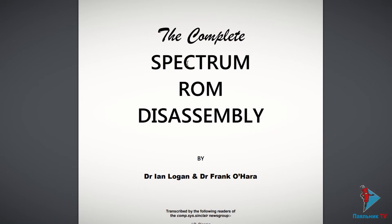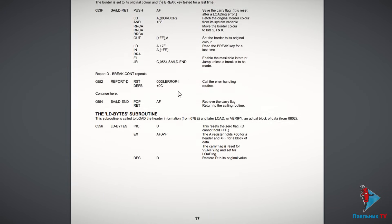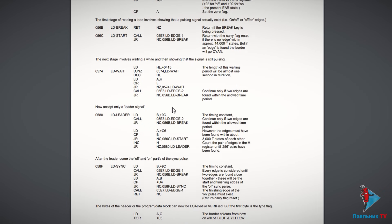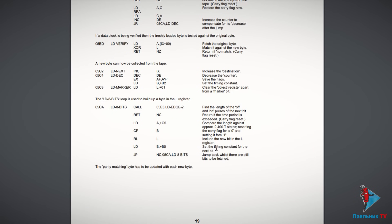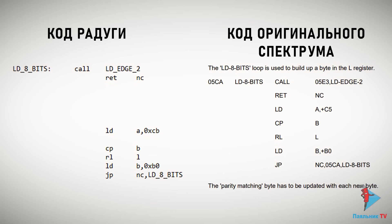Книга называется «Полный дизассемблинг спектрумского ПЗУ» — ссылочку оставлю в описании к видео. В этой книге я нашёл код, отвечающий за загрузку, то есть тот код, который запускается в обычном спектруме, когда вы вводите команду LOAD. И каково было моё удивление, когда листинг загрузчика «Радуги» совпал с кодом этой программы. Единственное отличие заключается в одной строчке подпрограммы, которая восстанавливает побитый 1 байт.